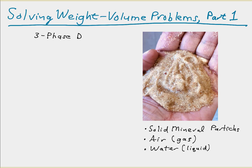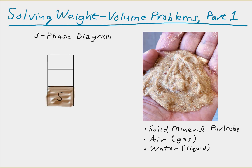We use the three-phase diagram to represent the particulate nature of soil. The lower box in the diagram represents the soil particles, the middle box represents the water or other fluids, and the top box represents the air or gas portion of the soil. The left side of the diagram represents the weights of each phase using units of either pounds or kilonewtons, and the right side represents the volumes using either cubic feet or cubic meters.